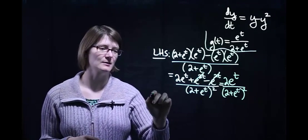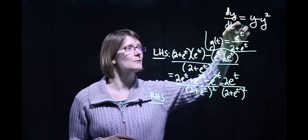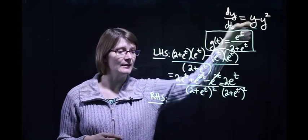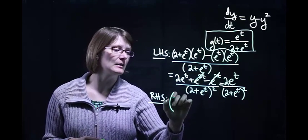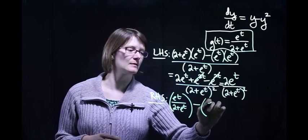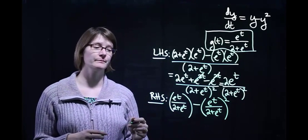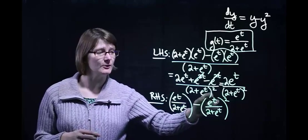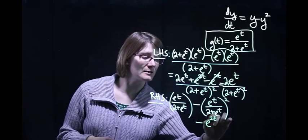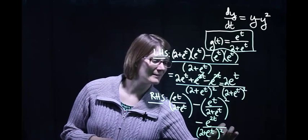Now let's see what our right-hand side is going to look like — that was the calculus, now we've got the algebra. The right-hand side says take our function, which is e to the t over (2 plus e to the t), and subtract that same function squared. So we have e to the t over (2 plus e to the t), minus e to the t over (2 plus e to the t), all squared. Squaring this fraction means squaring the numerator and denominator separately, giving e to the 2t over (2 plus e to the t) squared.